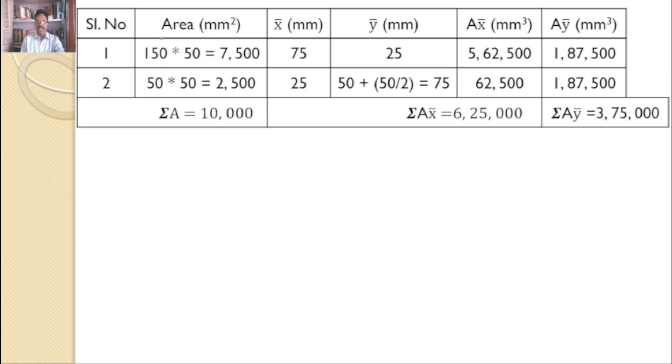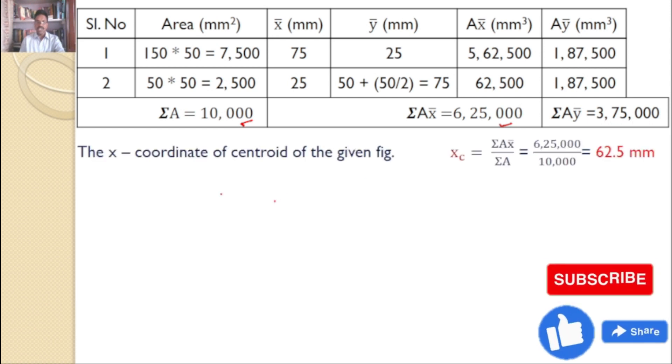Now find the centroid. I required this value sigma A, total area 7,500 plus 2,500 is 10,000, and sigma Ax bar is 6,25,000, and sigma Ay bar is 3,75,000. Hence the x-coordinate of the centroid xc equals sigma Ax bar by sigma A, which equals 62.5 mm. This is the x-coordinate centroid answer.